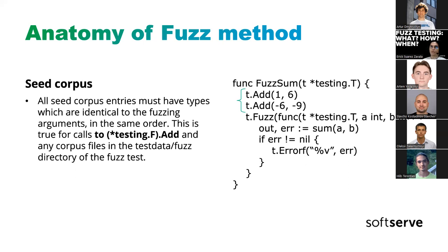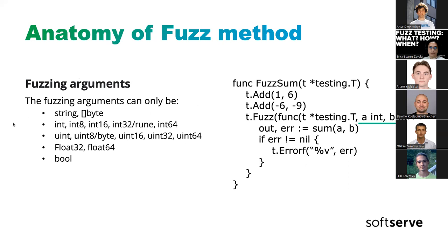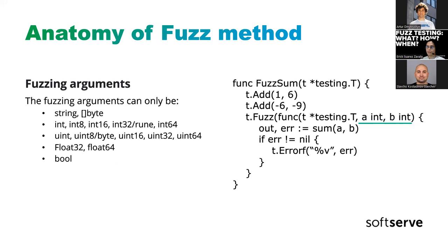Our seed corpus can also be fed by files in the folder testdata/fuzz. It's important to mention that the arguments should be primitive values — specifically strings, ints, uints, floats, and bools are the only types allowed as fuzz arguments.